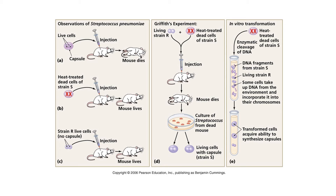So the heat-treated S strain becomes the donor bacterium — it dies and releases its DNA into the environment. The R strain then picks up some of the heat-killed S strain's DNA, specifically the gene to make a capsule, and integrates it into its own DNA.